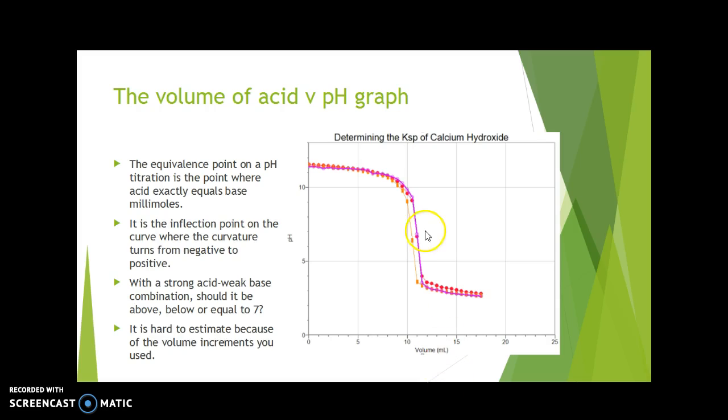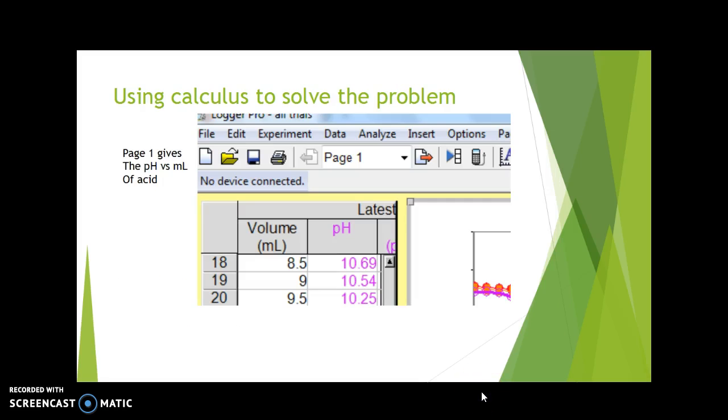It's hard to estimate here the equivalence point because you added probably 0.5 milliliter increments. So just where was the equivalence point? Well, we're going to use calculus to solve the problem.